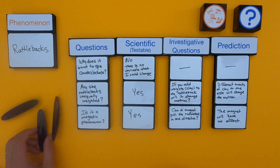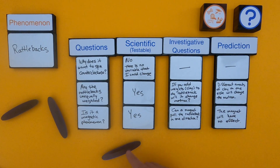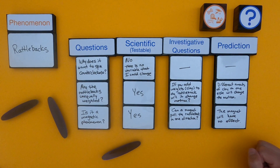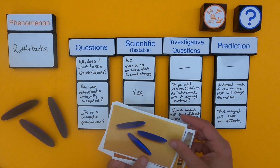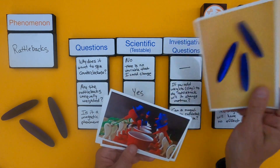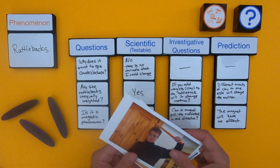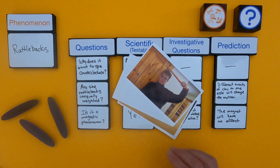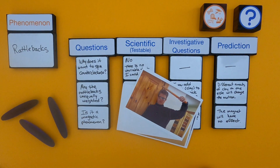My prediction: I feel like it's maybe unequally weighted, so if I added clay on one side, I think it might change the motion. They felt plastic to me, so I'm thinking the magnet will have no effect. We're not going to do the investigation — we're really just planning it. Through this mini lesson, you've learned how to ask investigative questions. If you want more practice, there are slides below with the drinking birds or the bubble levitator. Asking testable questions is one of the most important skills in science — it gives you direction on how to investigate.